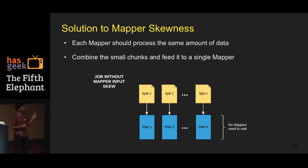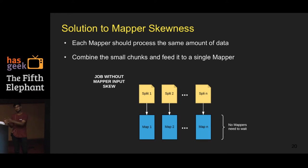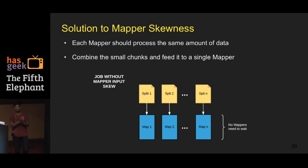To fix mapper data skew, you can combine smaller splits and feed them to a single mapper — Dr. Elephant will tell you the specific parameter, which is the combined file input size. The root cause: if a file is slightly larger than your HDFS block size, it gets split into a block-size chunk and a smaller chunk. With many such files, many small chunks are created, and the framework allocates as many mappers as there are splits. Setting the combined file input size combines those smaller chunks into a single mapper.